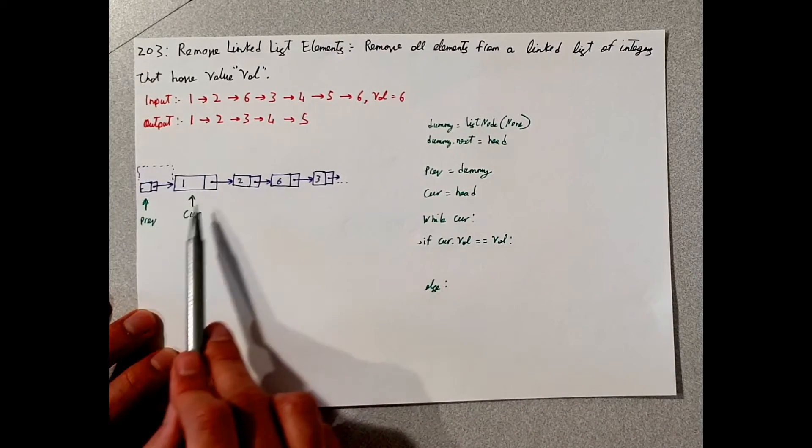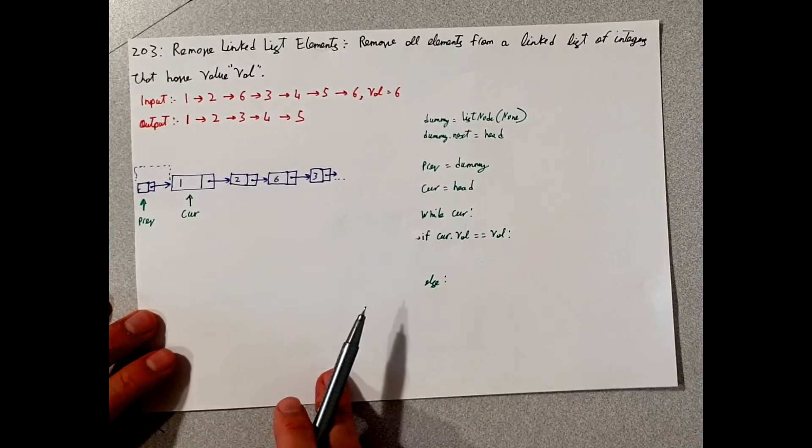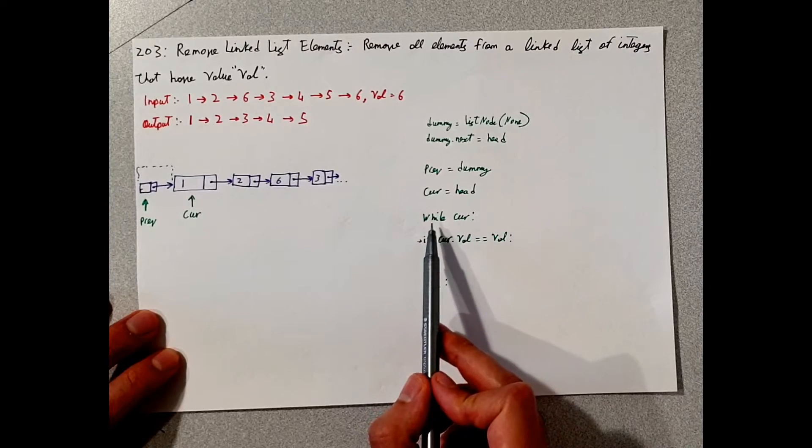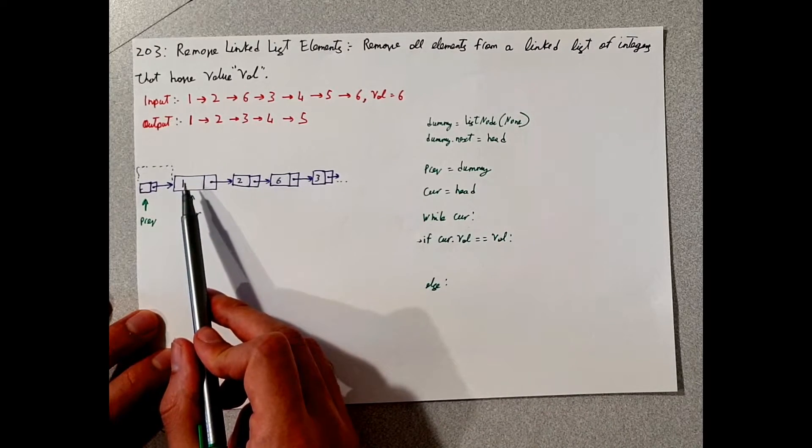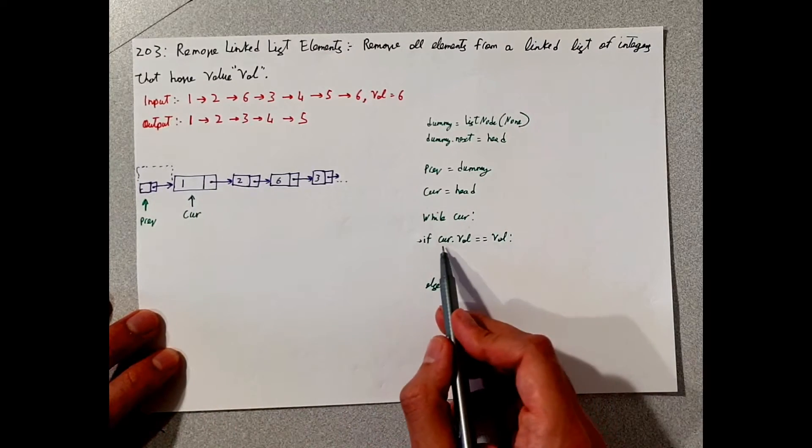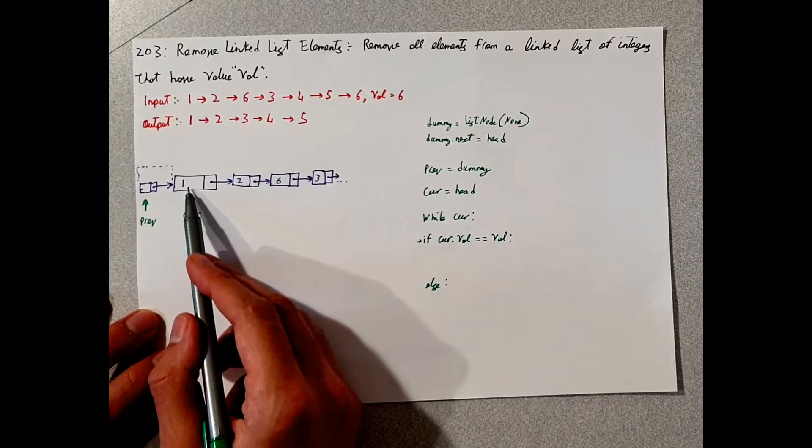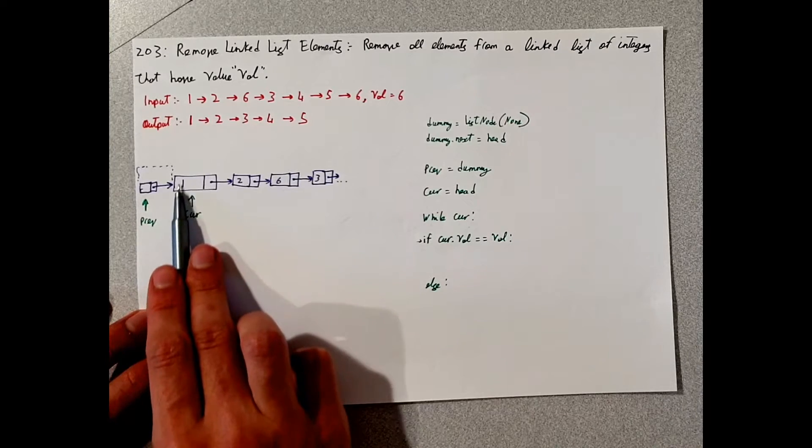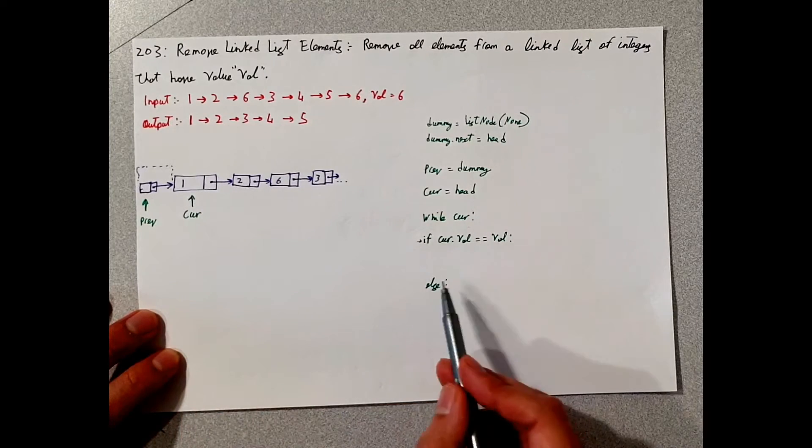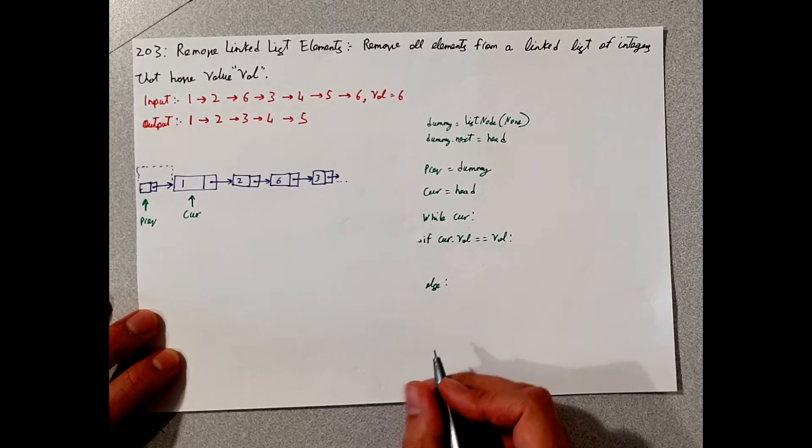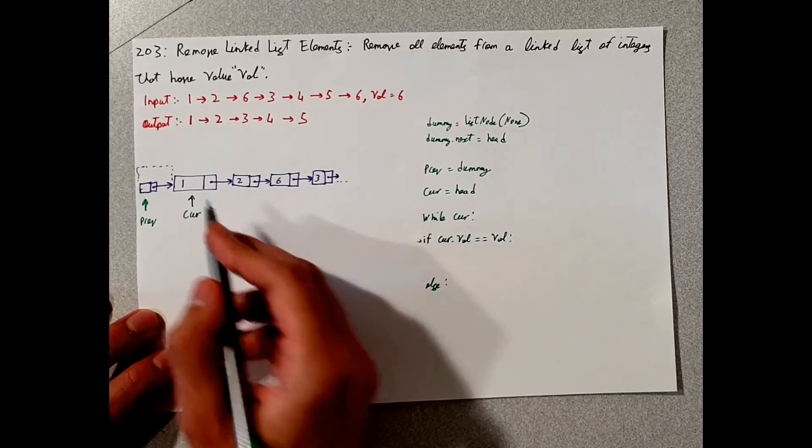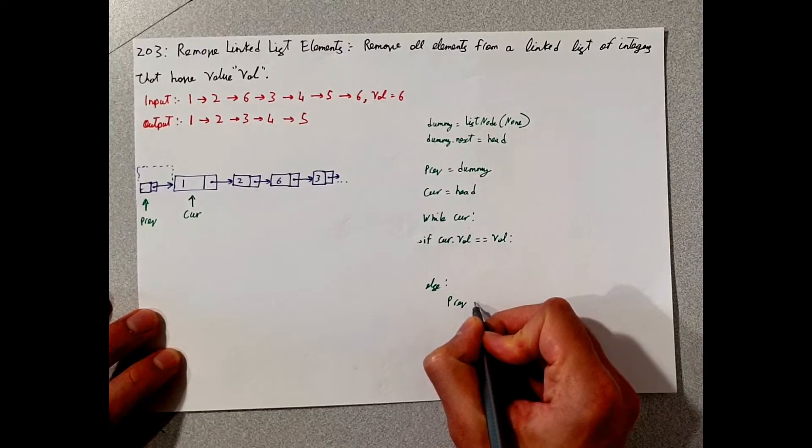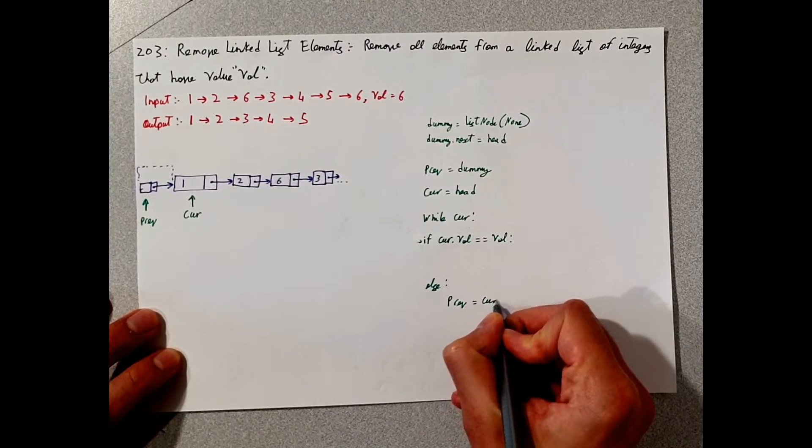So now we have two pointers, one pointing to the dummy and one pointing to the current. So while current, so while this is valid, if this happens to be, which in our case, so it's going to go to the first one. So let's say the first one will be else. So if it didn't equal anything, then I would like you to point the previous to the current.